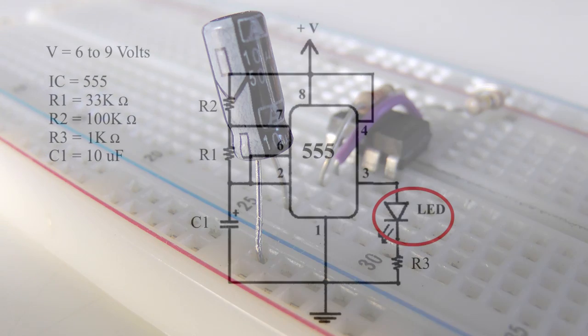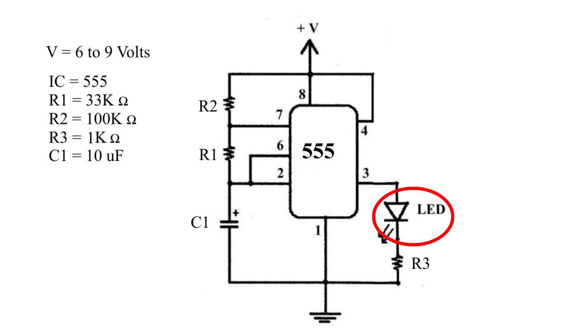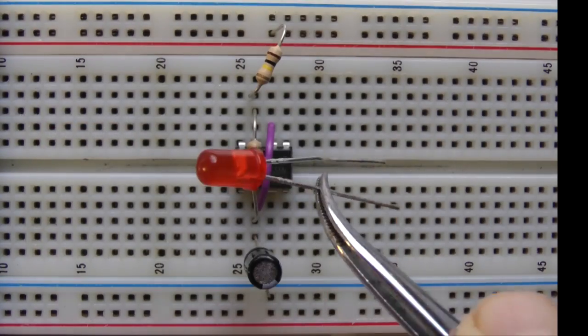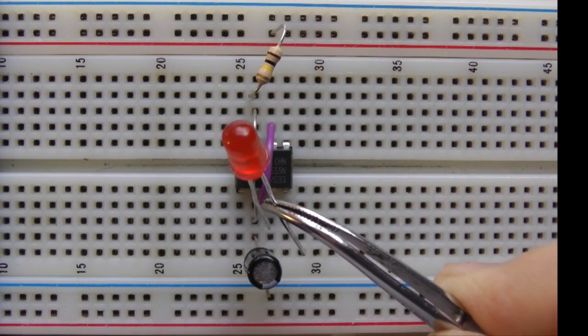Let's add the LED next. Light-emitting diodes are polarized. The positive lead connects to pin 3 of the 555. The other lead has to connect to a resistor, R3. To do this, connect the positive lead to pin 3 and the other lead to an unused row on the board.